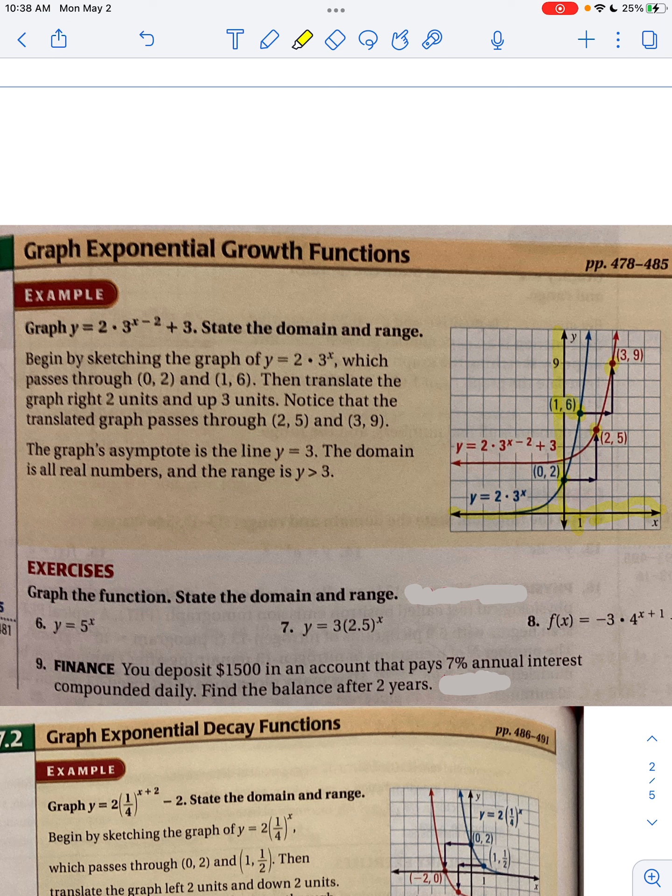You have to include where the asymptotes are. If it's a horizontal line, it's y equals zero or y equals negative two. If it's a vertical asymptote, it's like x equals zero or x equals five, depending on where it is. Make sure you know what domain - domain is your x values and range is your y values.